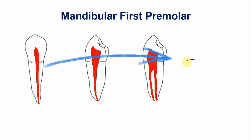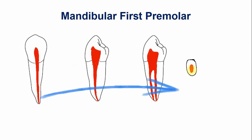Now looking at the cervical cross section of the root: at the cervical portion the root is oval in shape, and the shape of the canal is also oval, with the canal centered within the root. In the apical portion of the root, the root is more rounded and the shape of the canal also corresponds to the shape of the root and is also rounded.